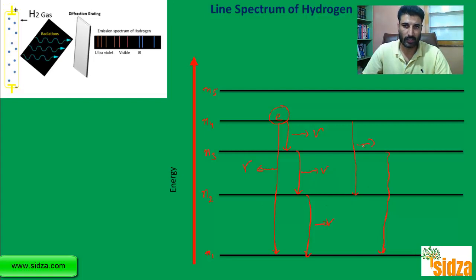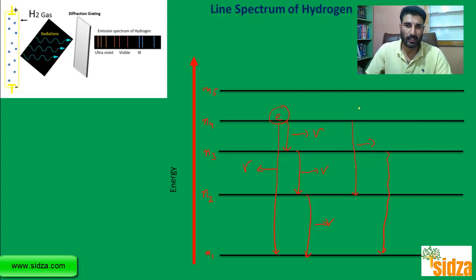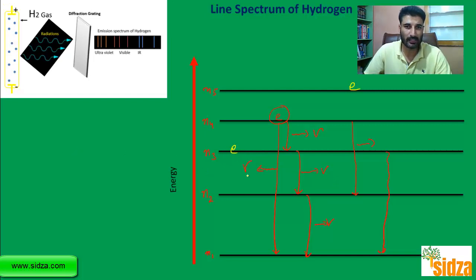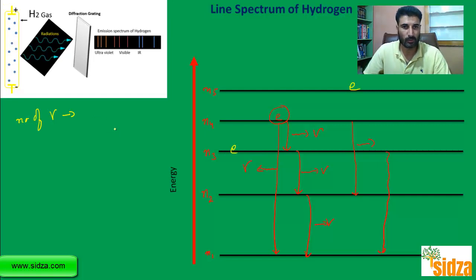To calculate how many different frequencies are emitted, we have a formula. The number of different spectral lines that an electron can emit while coming back to the ground state is equal to n(n−1)/2. When the electron is in the fourth state, you can count one, two, three, four, five, six — six different types of frequencies.